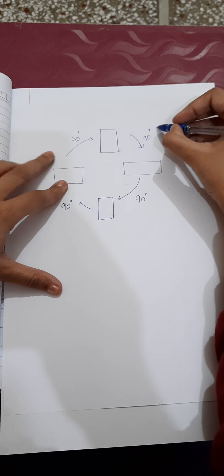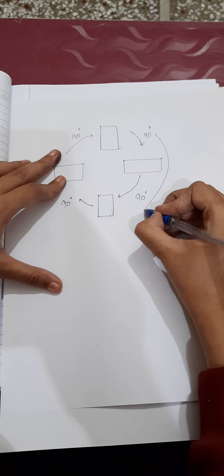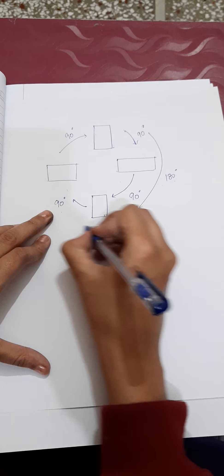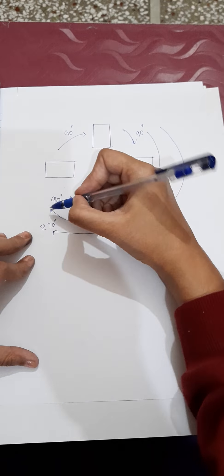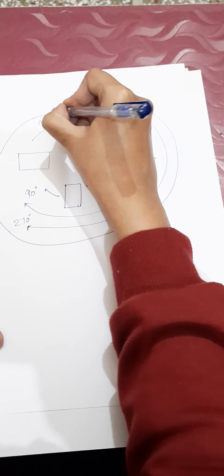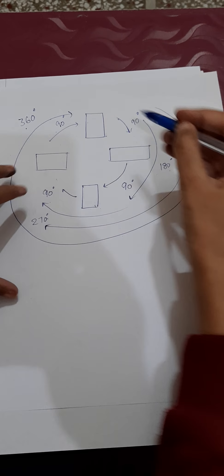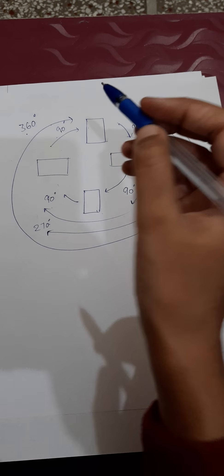Now, what is the order of symmetry? Let me tell you the angles. I rotated this at 90, then another 90 — so that is 180, then 180 plus 90 is 270, and 270 plus 90 is 360. So a complete rotation is 360 degrees.